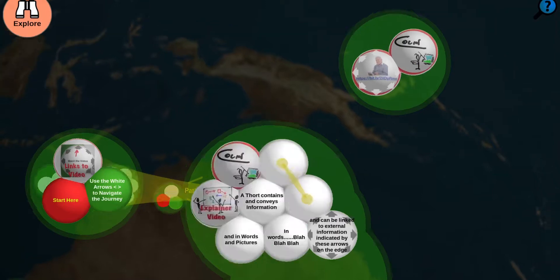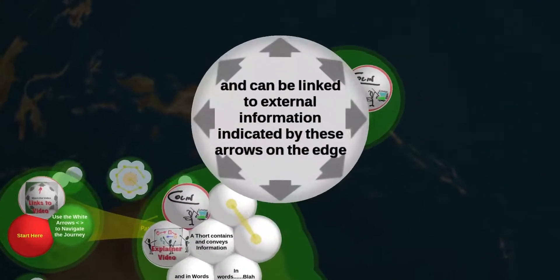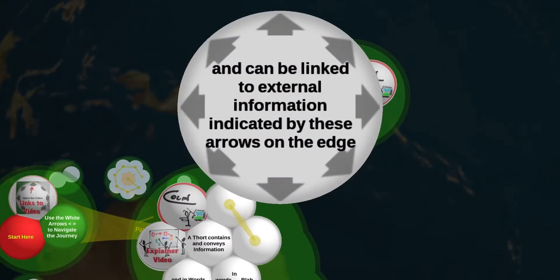When you see arrows around the edge of the thought, it indicates a link to some external information via a URL link. You can activate and navigate to this information by activating the thought.